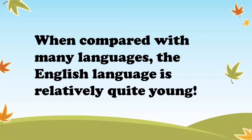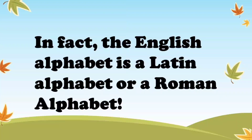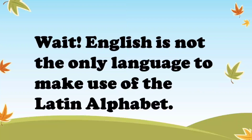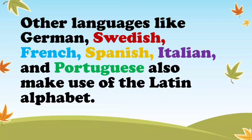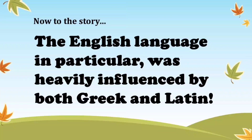When compared with many languages, the English language is relatively quite young. In fact, the English alphabet that we have today is a Latin alphabet or a Roman alphabet, and there are 26 letters in this one alphabet. Please remember, there is just one alphabet in English and 26 letters in this one alphabet. English is not the only language to make use of the Latin alphabet. Other languages like German, Swedish, French, Spanish, Italian and Portuguese also make use of the Latin alphabet.